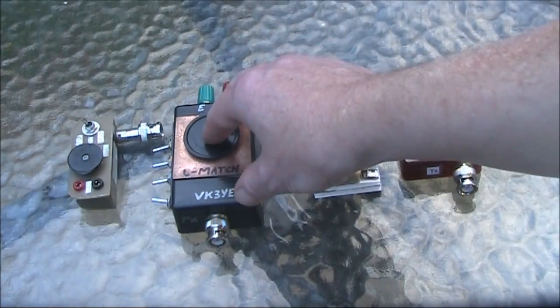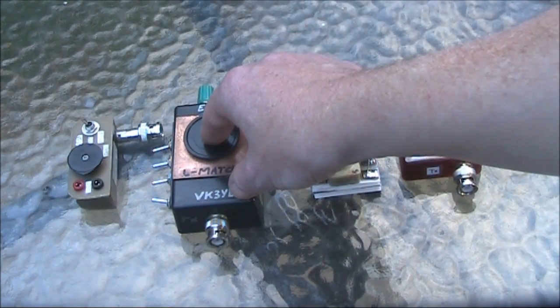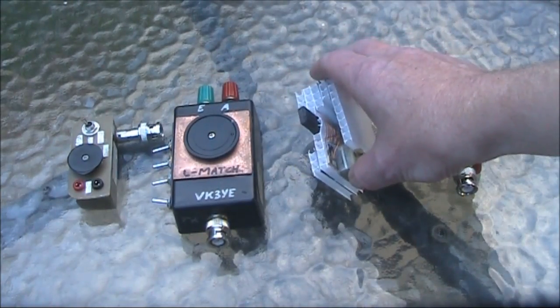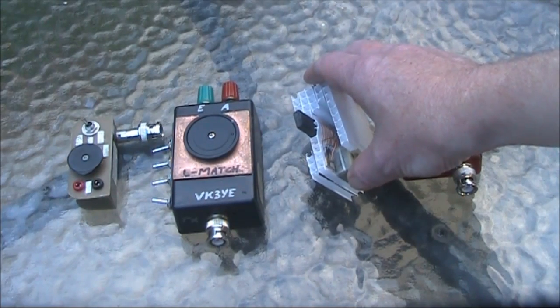That's different from this one, which has the inductance variable in 0.5 of a micro-Henry increments with the four switches. Or this one, which has a sliding ferrite rod, which gives you continuously variable inductance.